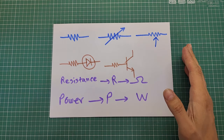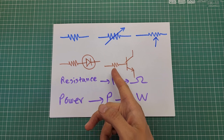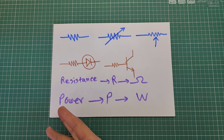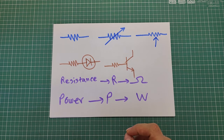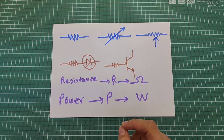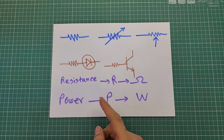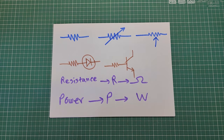Resistors have several parameters to consider, but their resistance and power are the most crucial. Resistance is represented by the uppercase letter R and power by the uppercase letter P. Resistance is measured in ohms, symbolized by the Greek letter omega, and is marked by color bands around the component. Power is measured in watts, symbolized by the letter W, and can be guessed by the size of the resistor. Both resistance and power are inherent features of the component.